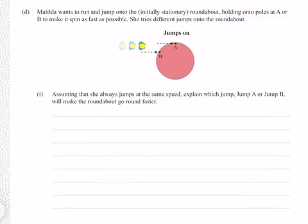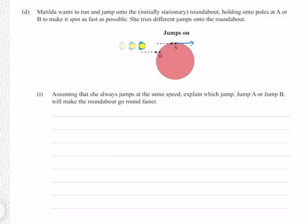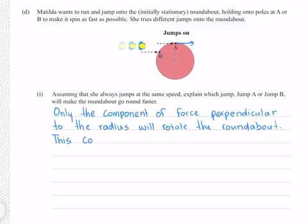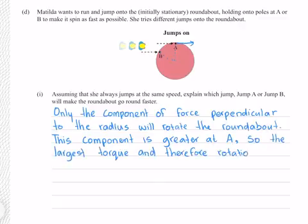Matilda wants to run and jump onto the initially stationary roundabout, holding poles at A or B to make it spin as fast as possible. Assuming she always jumps at the same speed, which jump — A or B — makes the roundabout go faster? The component of force that produces a torque is the component perpendicular to the radius. At A, all of her force is perpendicular to the radius, so all of it produces rotational torque. At B, a smaller component is perpendicular, so less force rotates the roundabout. The largest torque and therefore rotational velocity occurs at A.